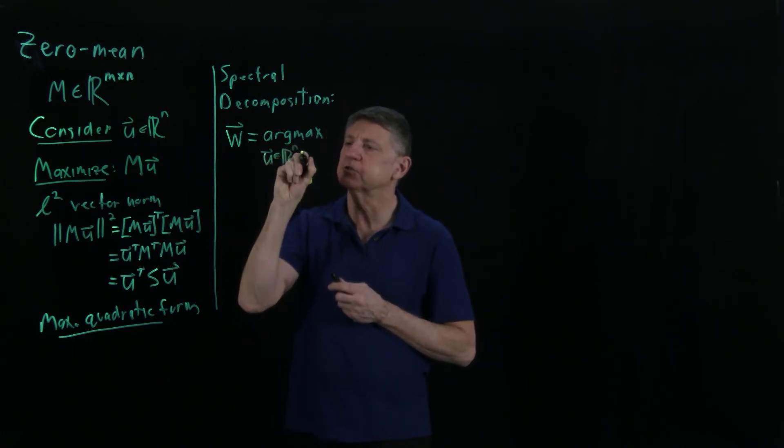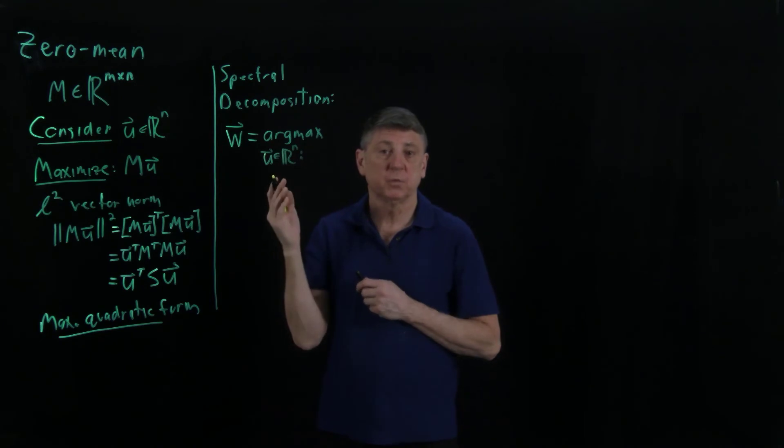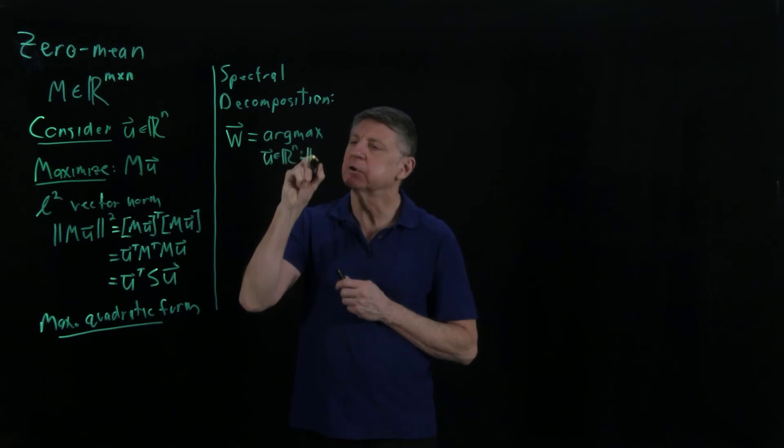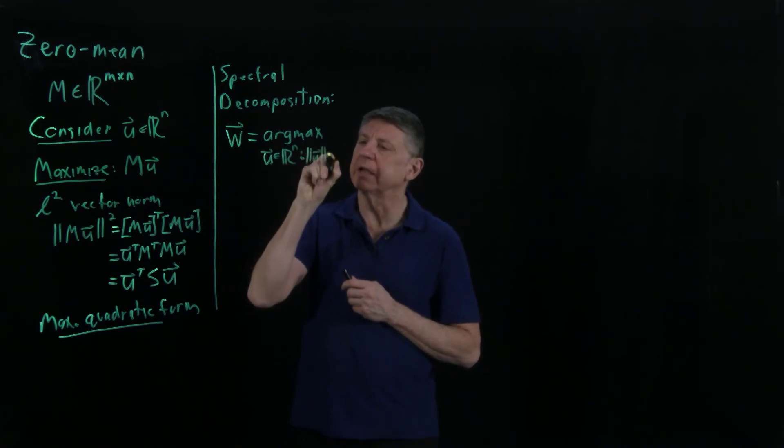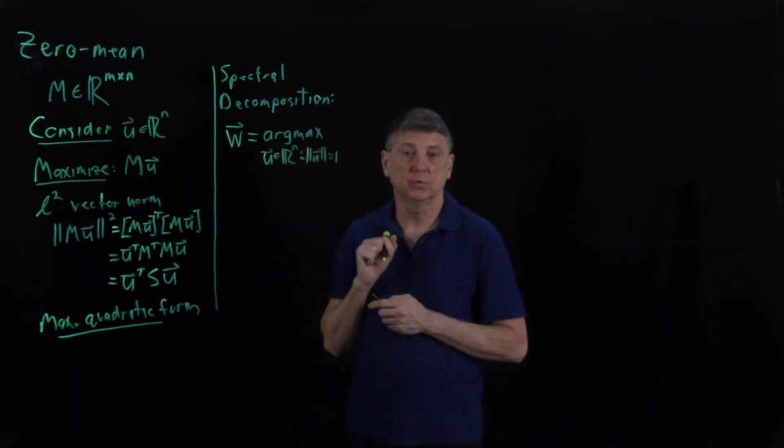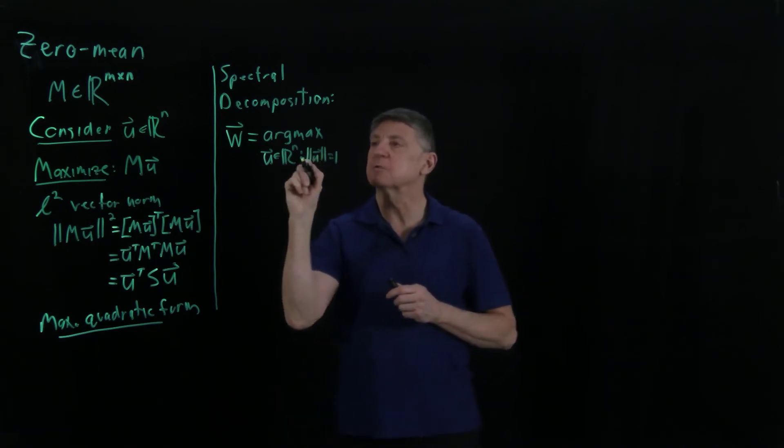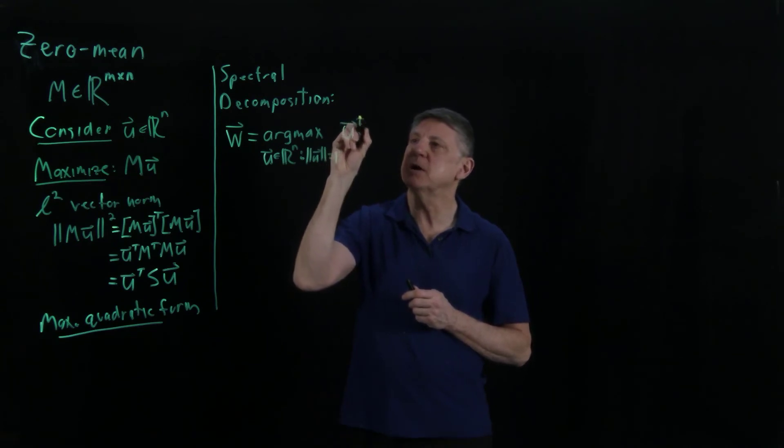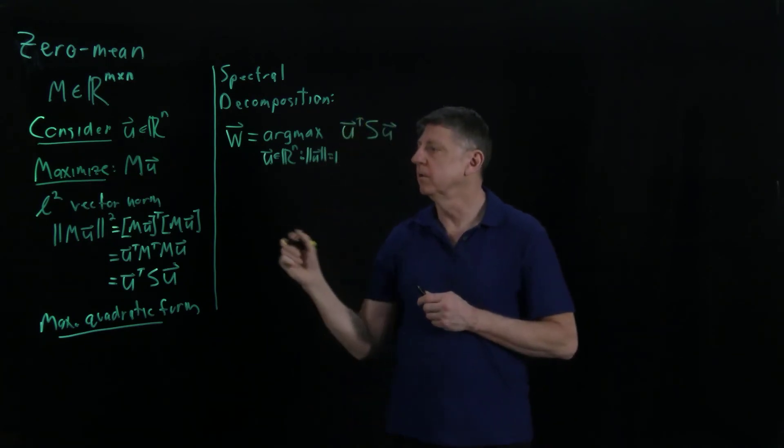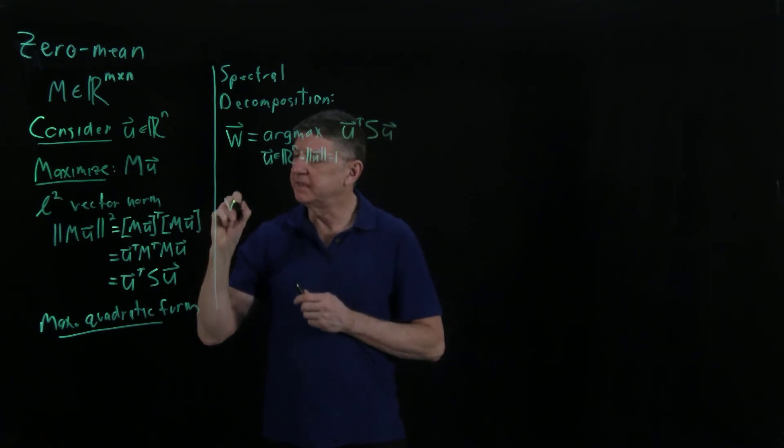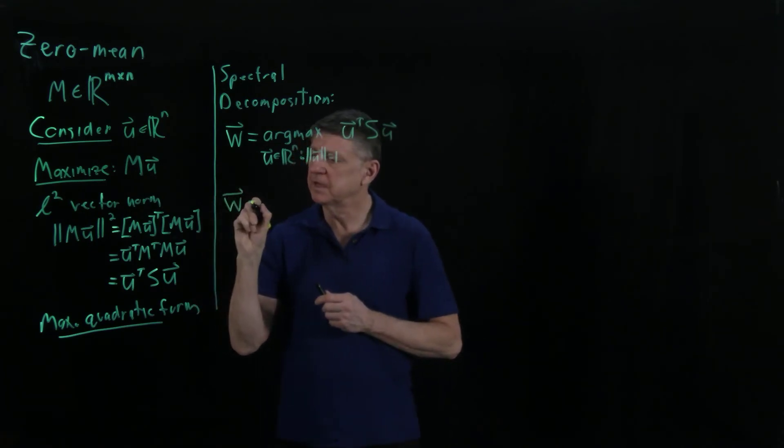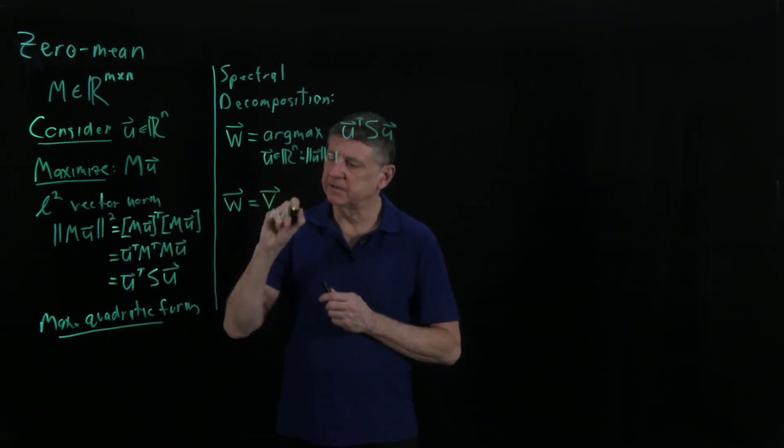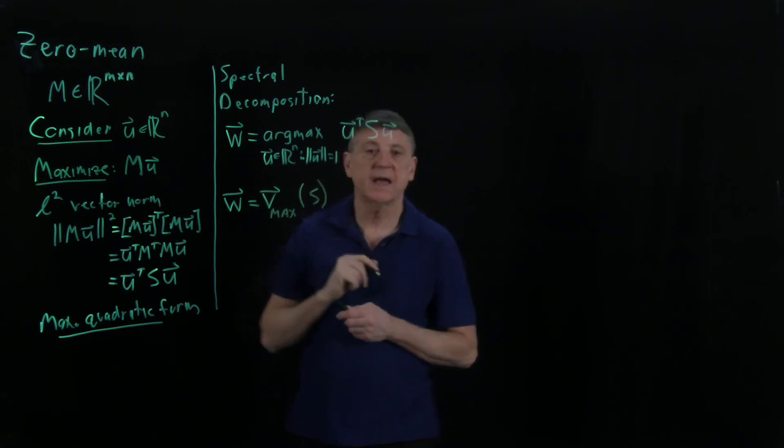That's the arg max problem of all U that have real entries and N. Let's constrain that so we don't want to pick things that are nearly infinite. Let's constrain so that we're only looking at vectors that have a unit norm. If we constrain our vectors to unit norm and we're trying to maximize U transpose SU, then we find that W is the maximum eigenvector of the matrix S.